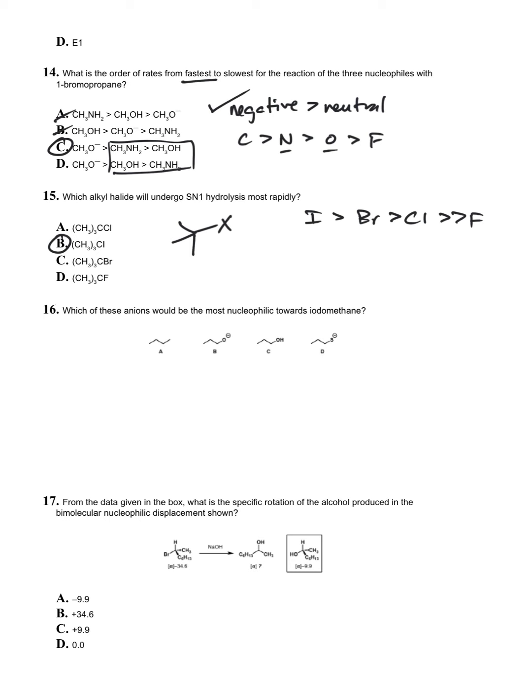Question sixteen: which of these anions would be the most nucleophilic? Again, negative is greater than neutral. And moving down the period, we have O to S. Nucleophilicity increases moving down the group, so this one's D.